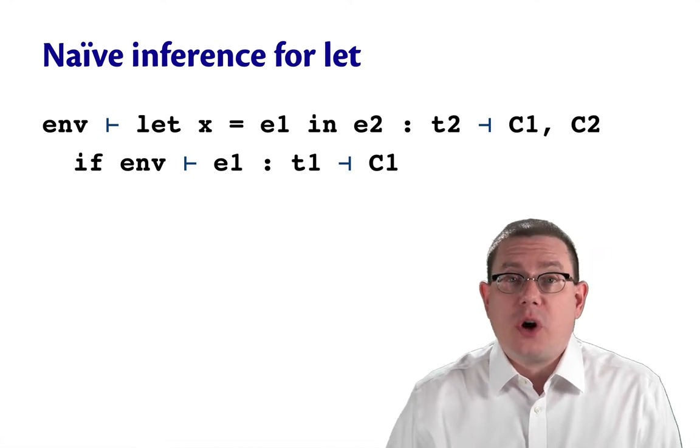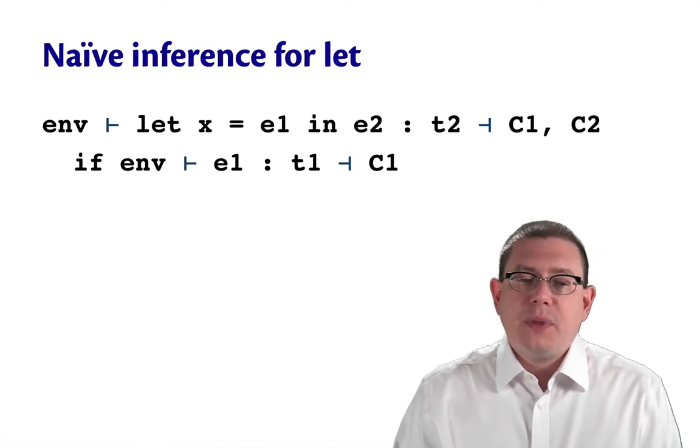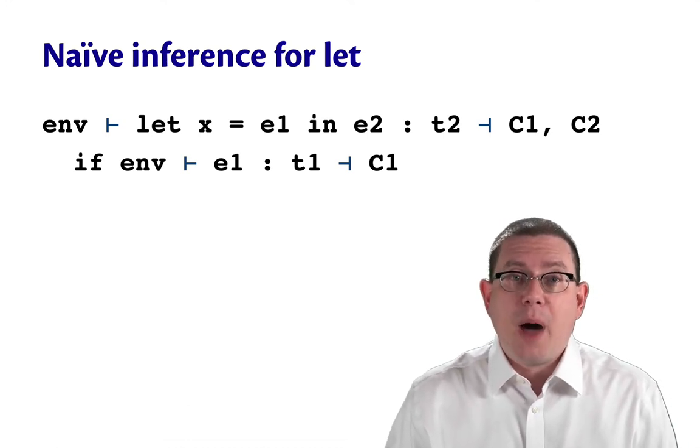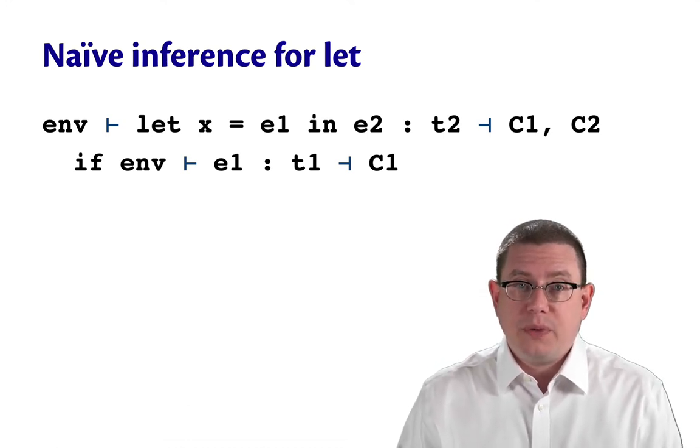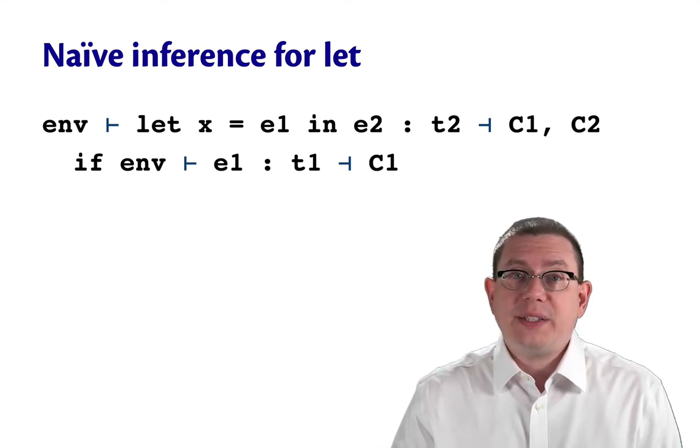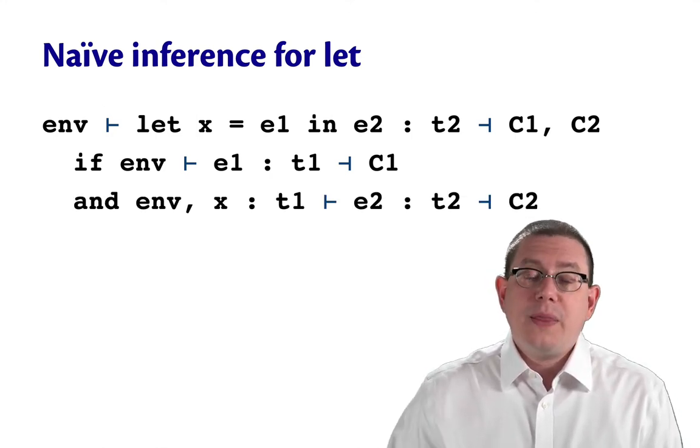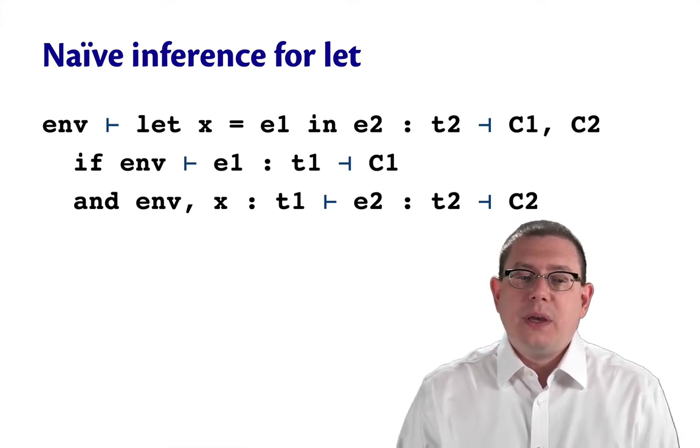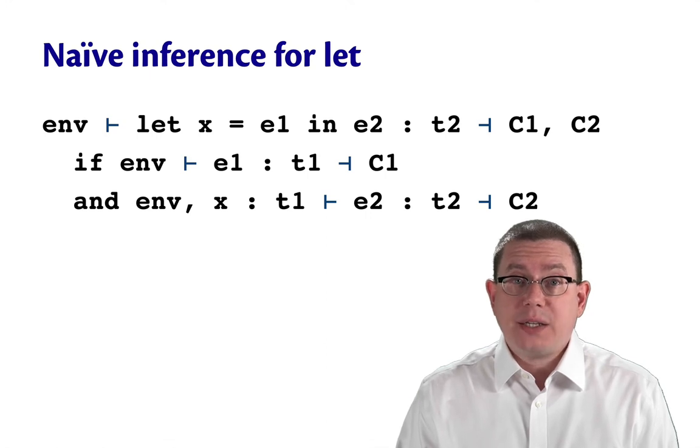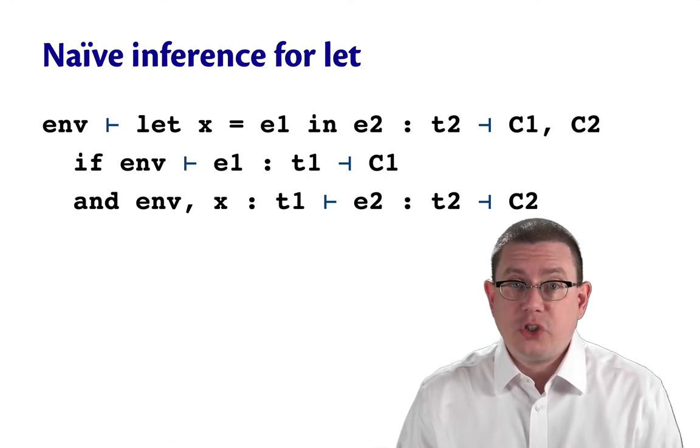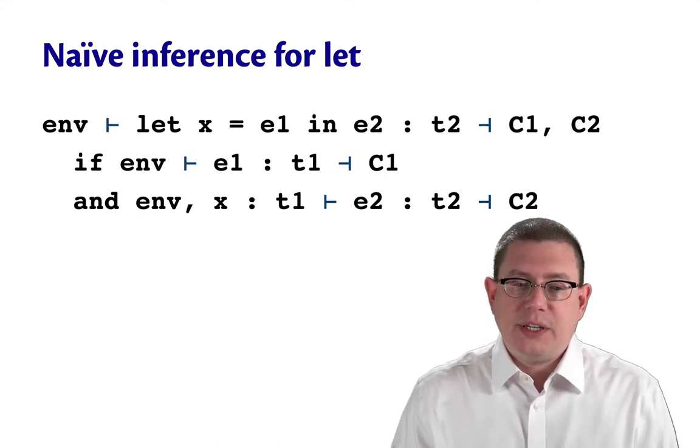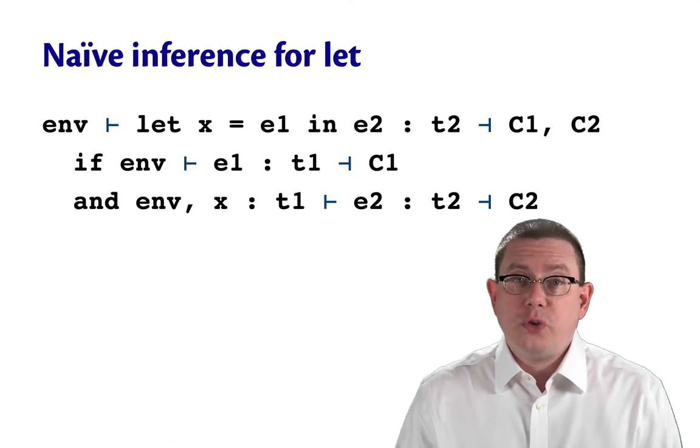The rule that you might start off with is that to infer the type of a let expression, you first infer the type of its binding expression e1. So that gets you a type t1 and some constraints C1. Then you could add x to the static environment under that type t1, infer the type of the body expression e2, getting a type t2 and some constraints C2, and then conclude that the type of the entire let expression is t2, along with those two sets of constraints.